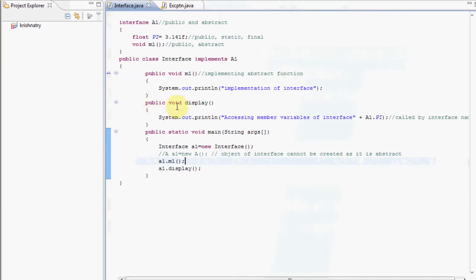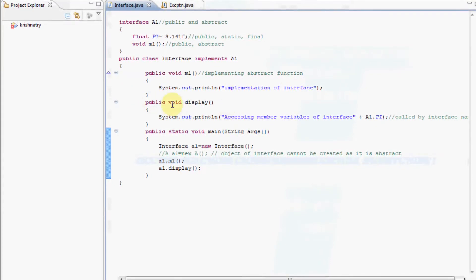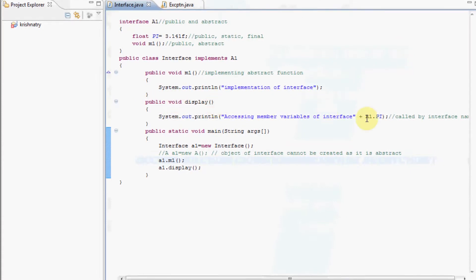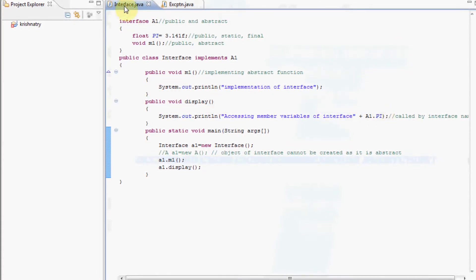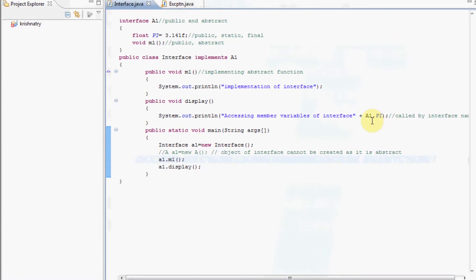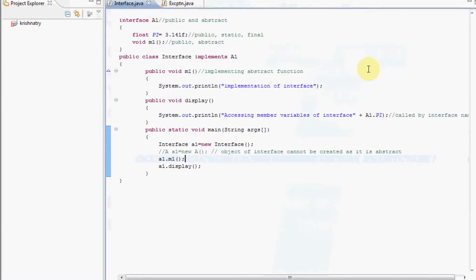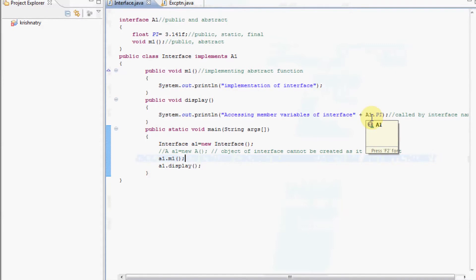We have another member method display which will access member variable of the interface. We can see that member variable of an interface is accessed by the name of the interface, a1.pi.